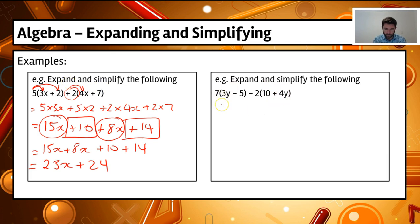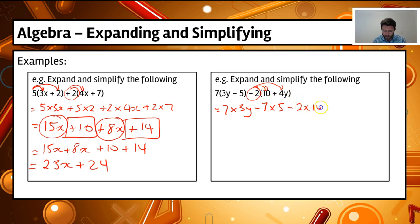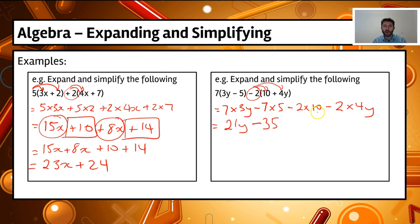Let's look at this next one. We've got 7 times 3y, and then a plus times a minus, so it's minus 7 times 5, because plus times minus gives a minus. Then we've got minus 2 times 10 and minus 2 times 4y. So minus times a plus is a minus: minus 2 times 10. Then minus times a plus again: minus 2 times 4y. Multiplying those out: 7 times 3y gives 21y, minus 7 times 5 gives minus 35, minus 2 times 10 gives minus 20, and minus 2 times 4y gives minus 8y.